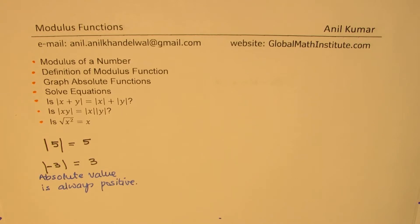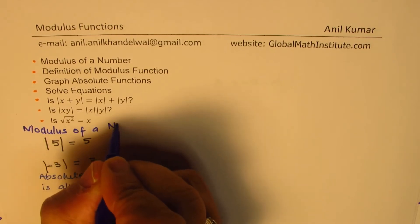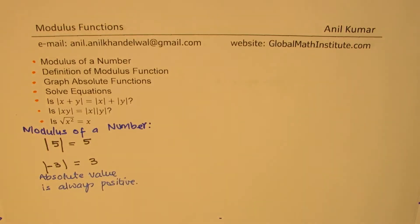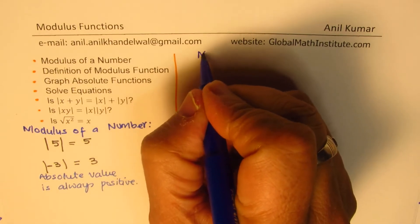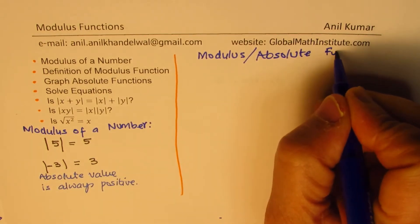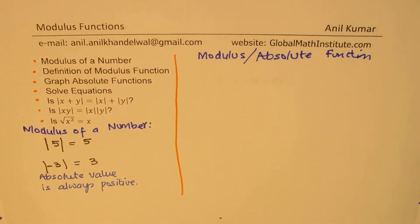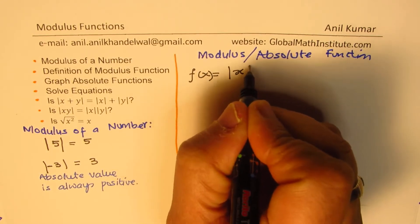We will use these two words — modulus or absolute value — interchangeably. Now how can we define this as a function? We can say modulus of a number. So modulus or absolute function: whenever we say function we try to relate it in terms of variables, so we write a function f(x) equals the absolute value or modulus of x. This becomes a function — the y value in terms of x.